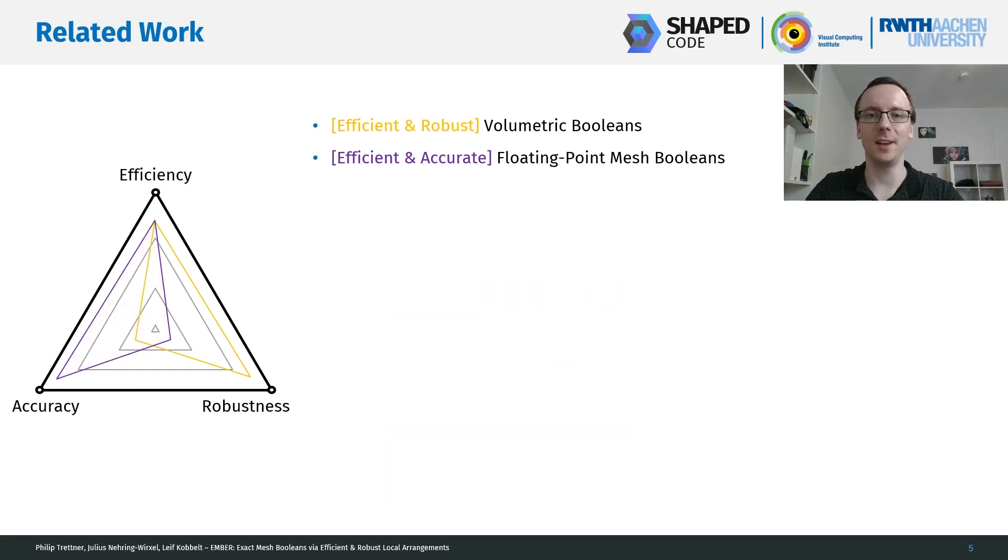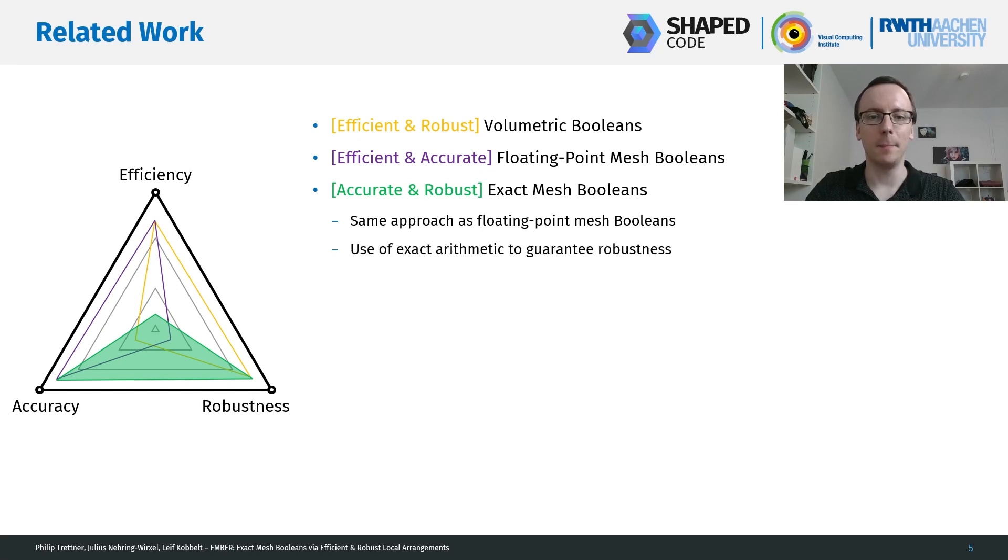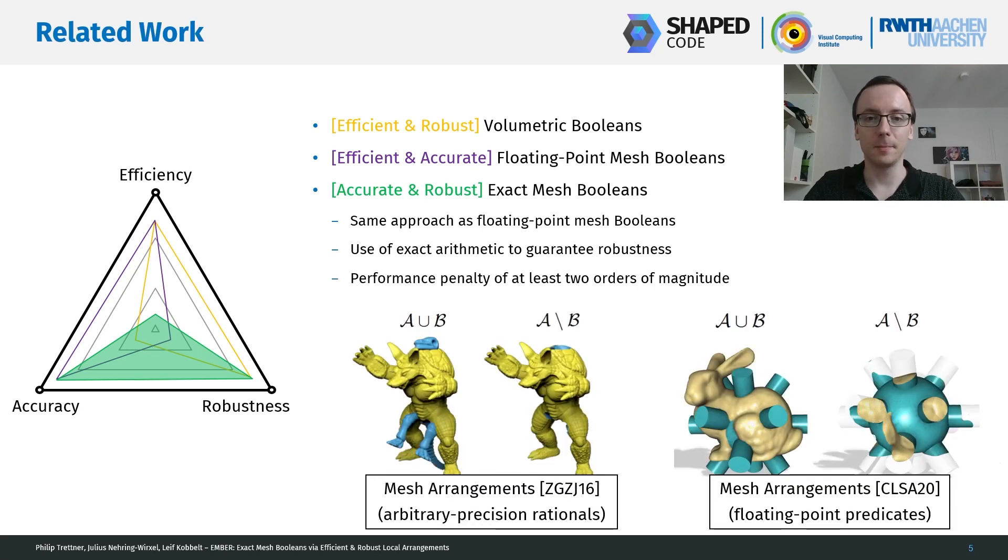If we replace the floating point calculations by some kind of exact arithmetics, we get exact mesh booleans. So basically they are the same approach as the floating point mesh booleans, but we use exact constructions or exact predicates to guarantee robustness. However, we typically lose at least one or two orders of magnitude of performance here. Still, there are some great developments here in the recent years, for example, the mesh arrangements based on arbitrary precision rationals or the mesh arrangements based on adaptive floating point predicates.